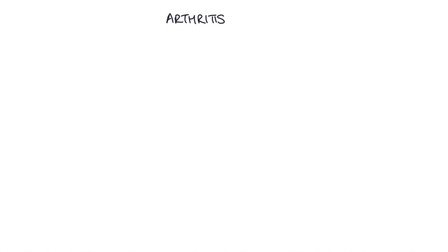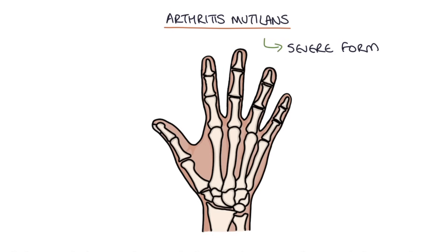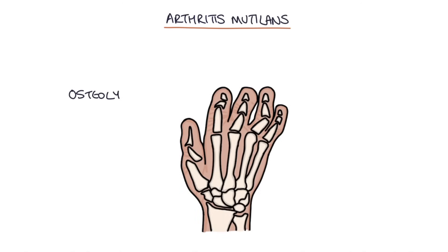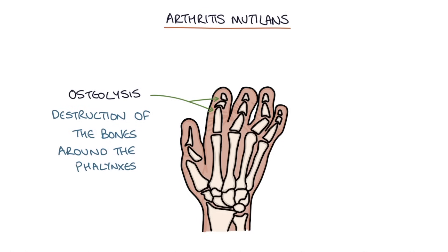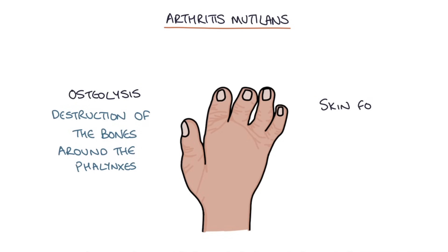Arthritis mutilans is a specific severe form of psoriatic arthritis occurring in the phalanges — the bones inside the digits. Osteolysis at either end of the phalanges causes the digits to shorten because the bones themselves are getting shorter. This causes the skin around the finger or toe to fold in on itself as the bones inside get shorter and closer together, giving an appearance called a telescopic finger — the finger shortens and the skin folds inward like a telescope.